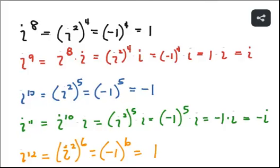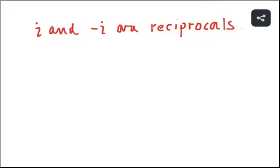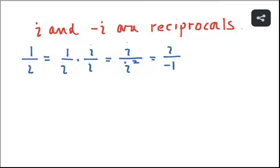The four possible outcomes when raising *i* to powers are 1, i, −1, and −i. Also, *i* and −*i* are reciprocals. To show this: the reciprocal of *i* is 1/i. Multiplying by i/i gives i/i², and since i² = −1, we get i/(−1) = −i. So 1/i = −i, which confirms that *i* and −*i* are reciprocals.